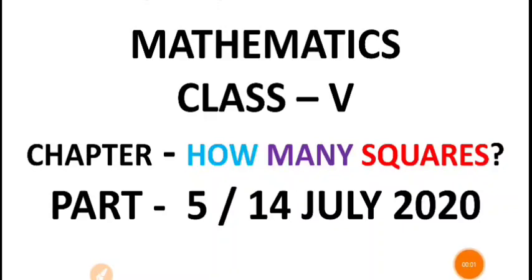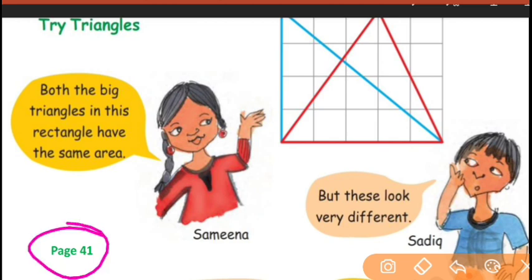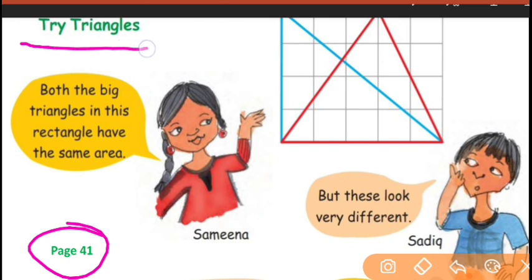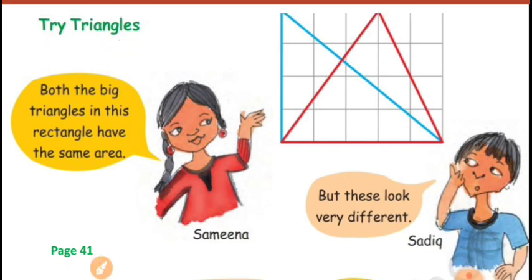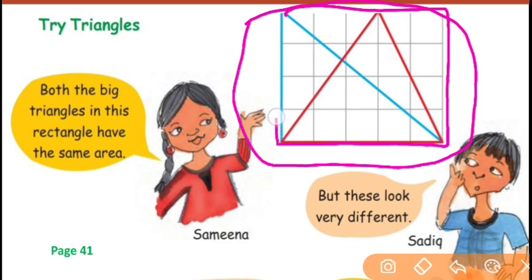Good morning children, this is the next part of the lesson — how many squares. Go to page number 41, open your book. You will see a topic: triangles. Here you will see a picture — a diagram. This is a rectangle with 20 squares. You can count — there are 20 squares in it.